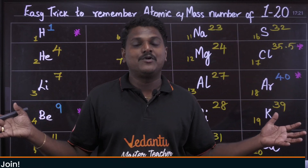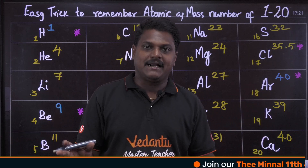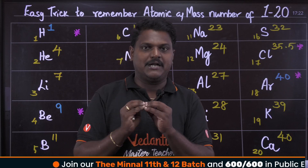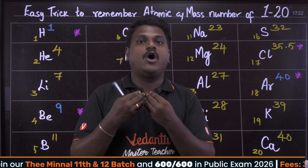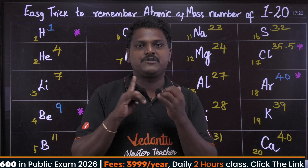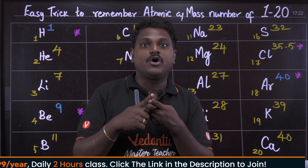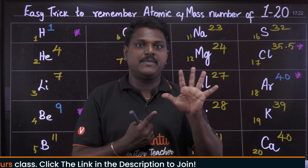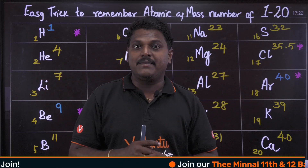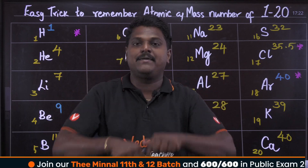So that's it — finished! Very easy. Very very easy. Simple trick: even number atomic number — multiply by 2 to get mass number. Odd number atomic number — multiply by 2 plus 1 to get mass number. Exceptions are: Hydrogen, Beryllium, Nitrogen, Chlorine, and Argon — these five are exceptions, the rest are the same. So 2300 score. Atomic number video — watch it. How is this shortcut? Comment in the comment box.